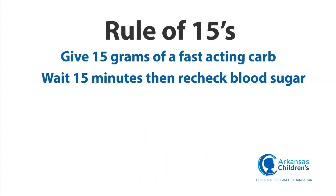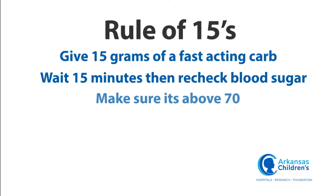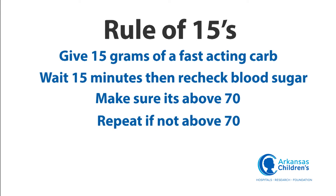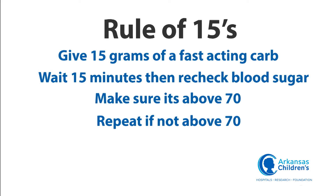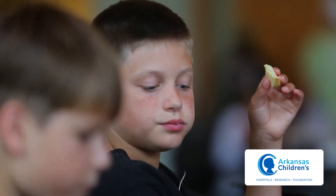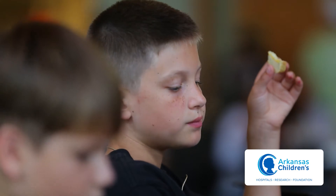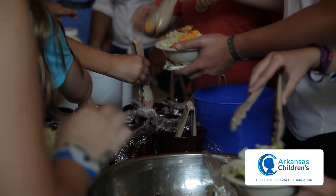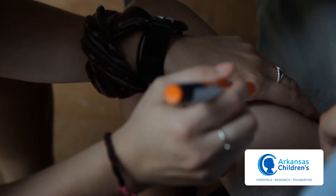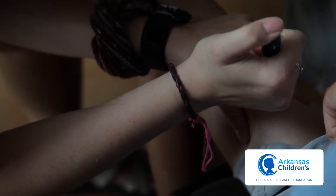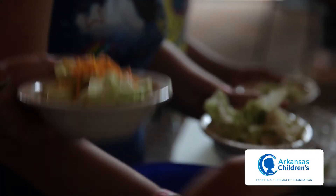After giving the fast-acting carb, wait a full 15 minutes and recheck the blood sugar to make sure it is above 70. If not, repeat the fast-acting carbs and wait another full 15 minutes to recheck. Once the sugar is above 70, follow this up with a 15-gram carbohydrate snack that also includes protein, unless it is time for a meal. You will still give insulin for the meal eaten after the sugar is above 70, but not for the fast-acting carbs. Remember to always treat and then eat.